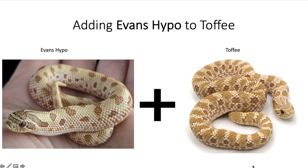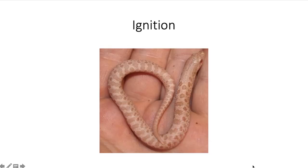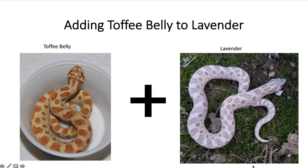The next recessive gene is the Evans hypo — it looks very similar to the toffee as they both have that brownish color. When you mix these two together you get a snake called the ignition. I had a hard time finding pictures of it, but it's a pinkish looking snake. This is very unique and I don't think a lot of people have even produced this animal yet.